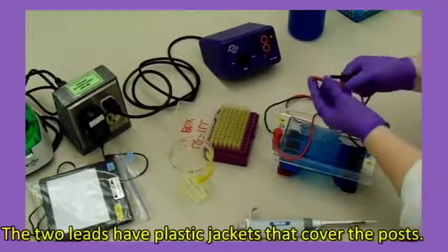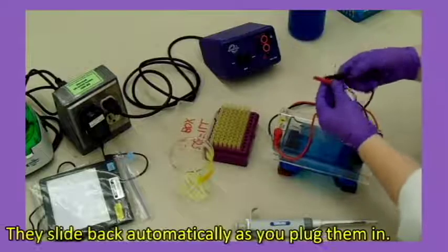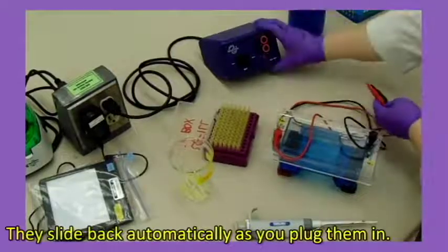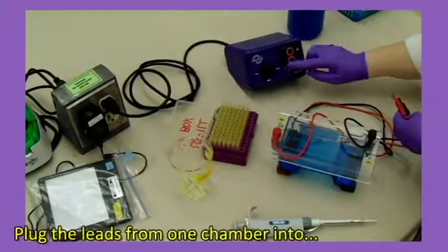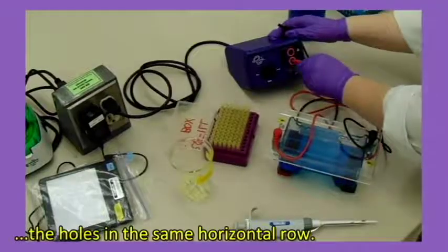The two leads have plastic jackets that cover the posts. They slide back automatically as you plug them in. Plug the leads from one chamber into the holes in the same horizontal row.